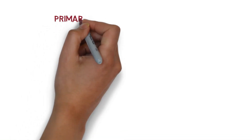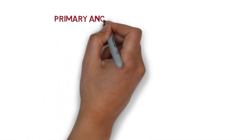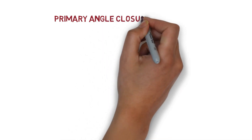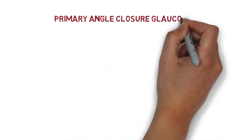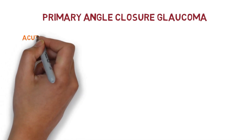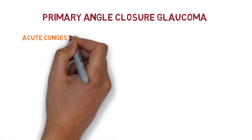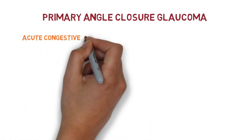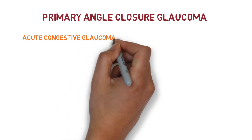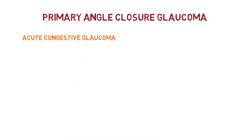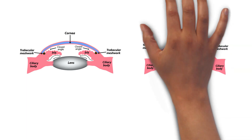Hey medicos, welcome back. In this lecture we are going to talk about primary angle closure glaucoma, which is also called acute congestive glaucoma. I recommend you to watch our previous video on the basics of glaucoma. Now, what is the difference between open angle glaucoma and closed angle glaucoma?